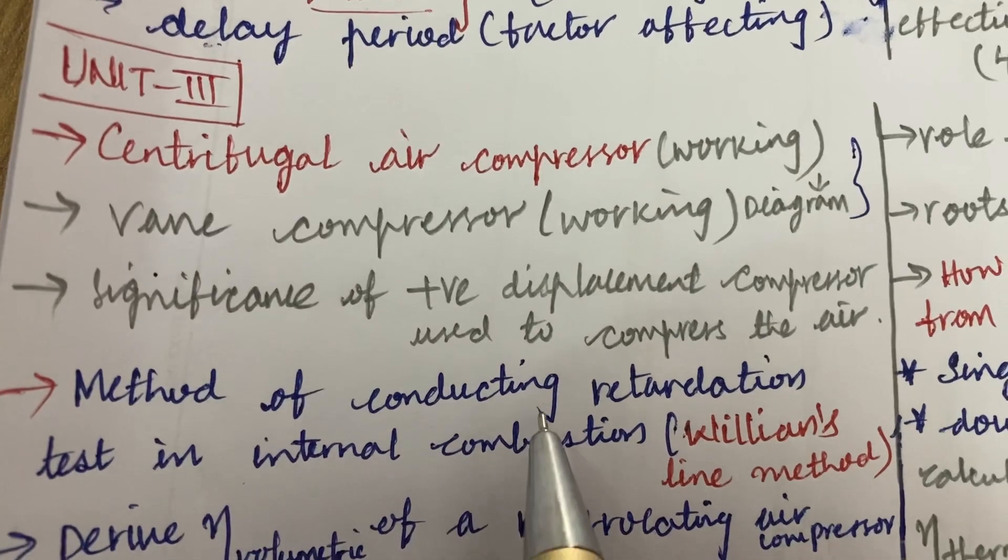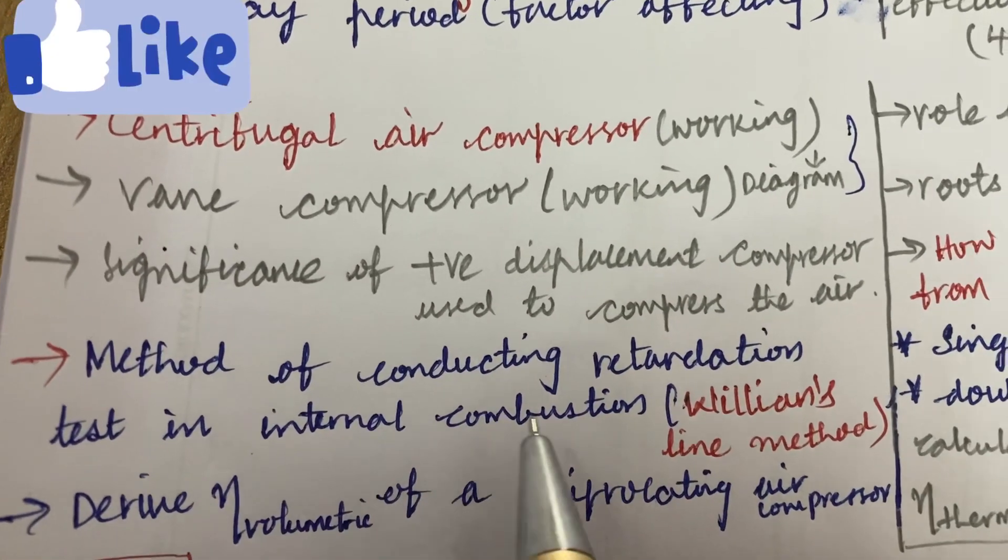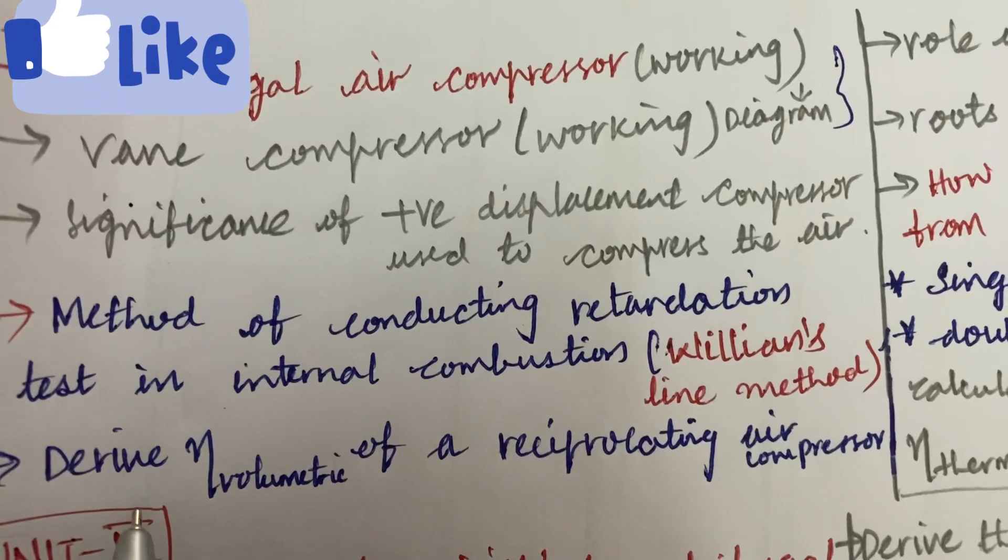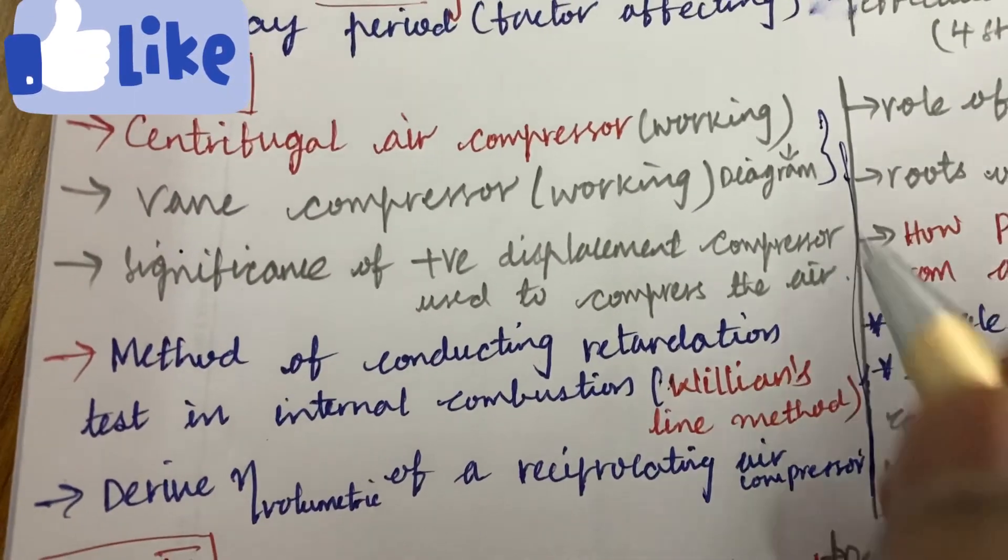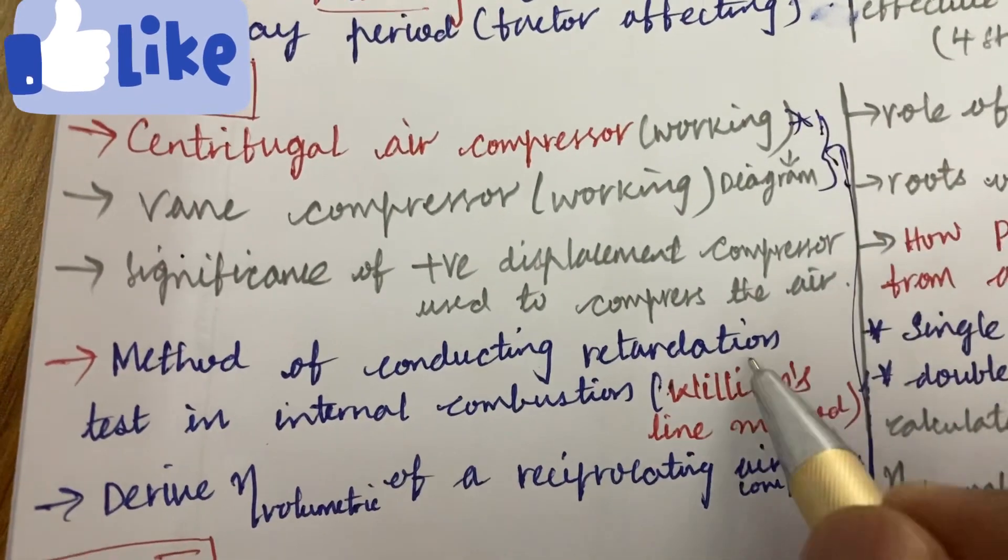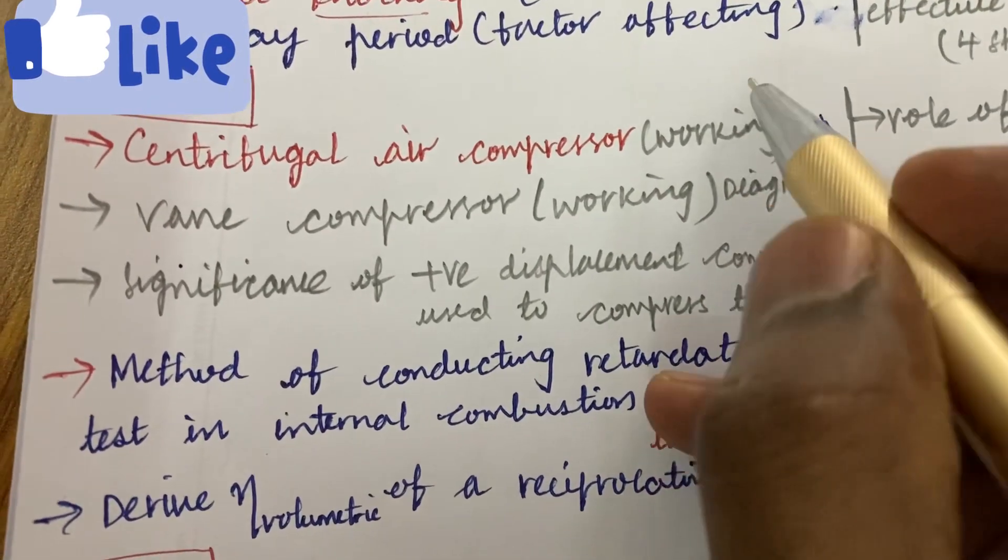The significance of positive displacement compressor used to compress the air and method of conducting retardation test in the internal combustion using Williams Line method and the derived volumetric efficiency of a reciprocating air compressor. This part, you are going to get this question for sure as well as this question may be also asked, is asked several times.